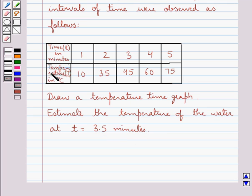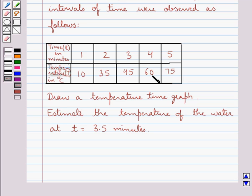This is the table of observations given to us. We have the time, i.e. small t in minutes, and the temperature, i.e. capital T in degrees Celsius. At 1 minute the temperature is 10°C, at 2 minutes it is 35°C, at 3 minutes it is 45°C, at 4 minutes it is 60°C, and at 5 minutes the temperature is 75°C.